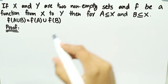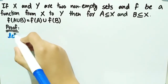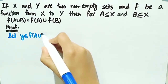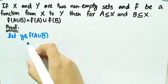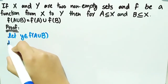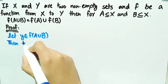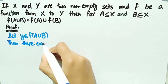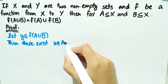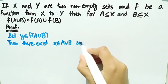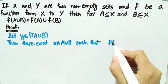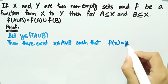Let's start the proof. We consider an arbitrary element y that belongs to f of a union b. That is, y is an image of any arbitrary element of a union b under f. Then there exists an element x belonging to a union b such that when we operate f on x, it is equal to y.